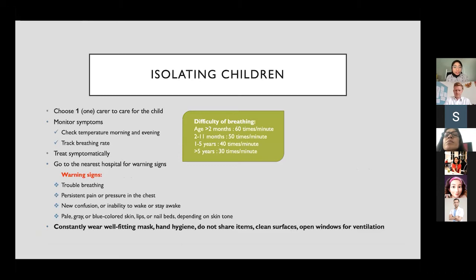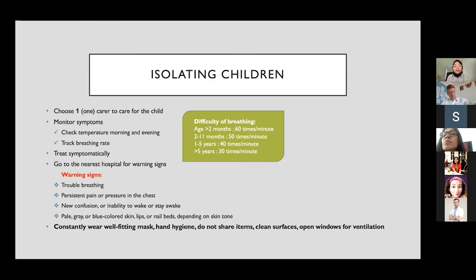In some cases, parents test negative but their children test positive due to transmission at school. If a child is old enough to isolate on their own, the isolation protocol is the same as for adults: a separate room with their own bathroom, eating in their own room for five days. After day five, if they no longer have fever, they can rejoin the family — but not eating together until day ten.